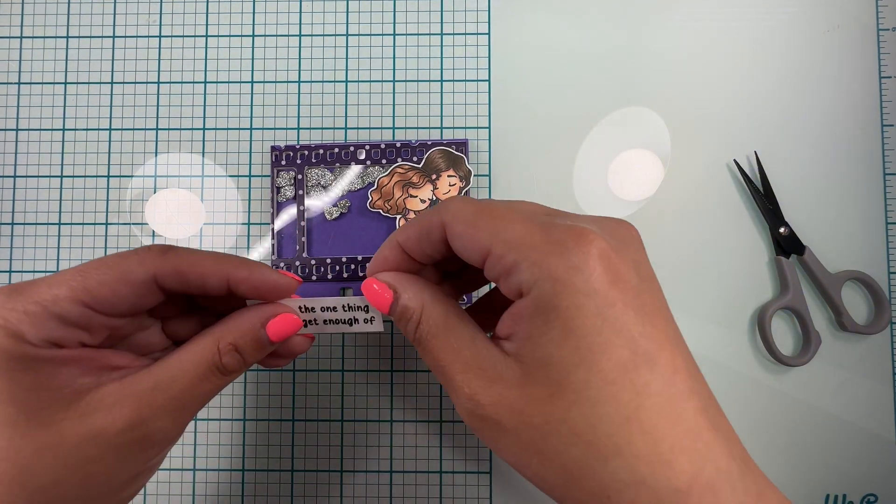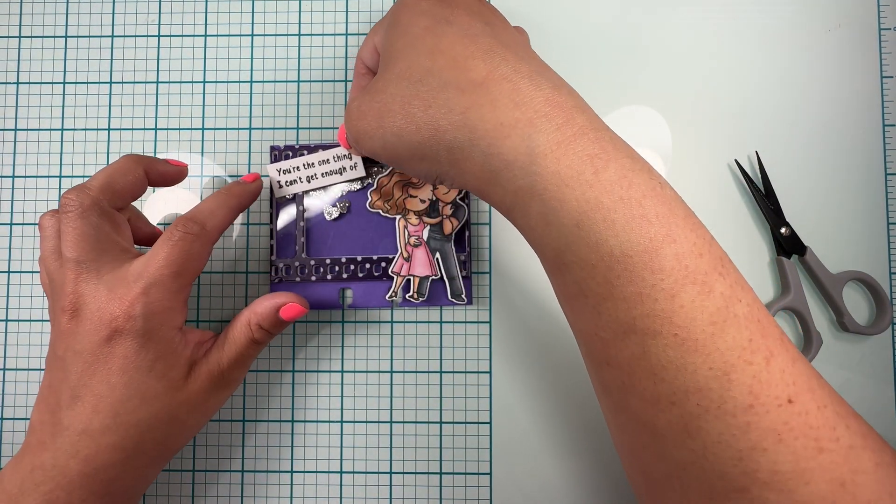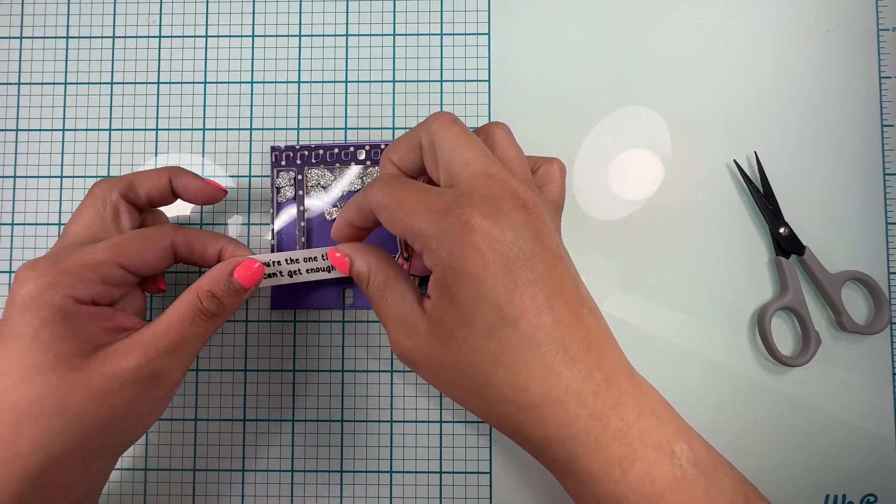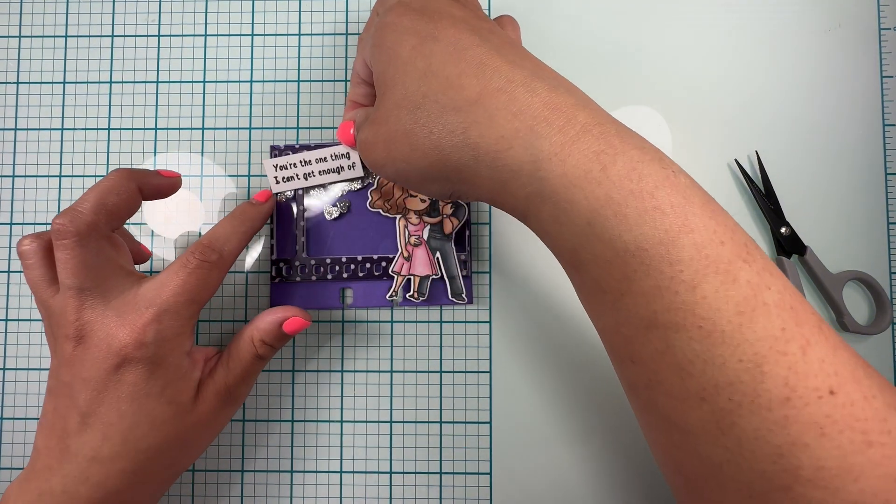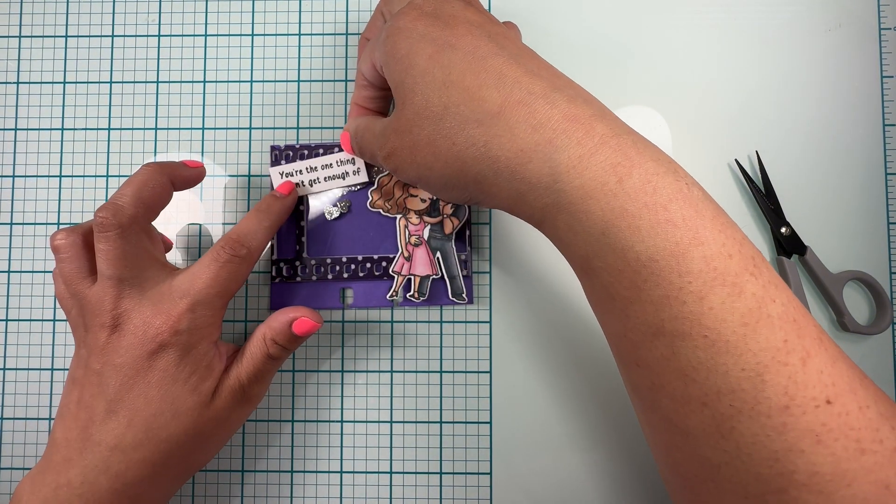And you can see that here that I just added a couple extra foam pieces to have support for them. And then here I was figuring out where do I want my sentiment to go, but I decided to put it on the lower left side.